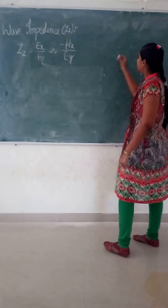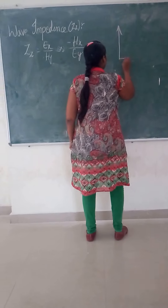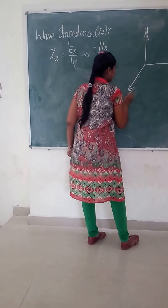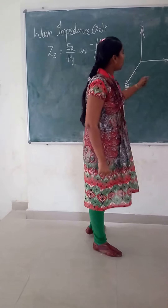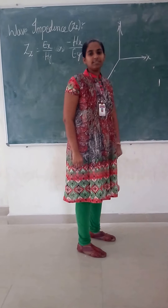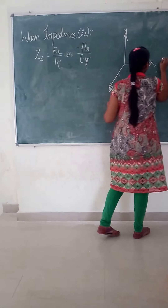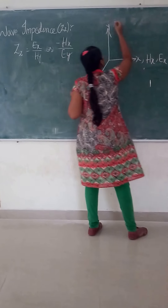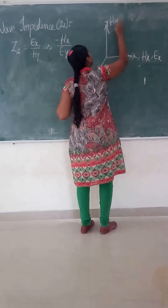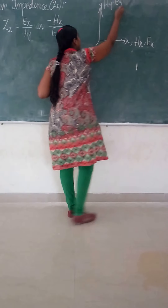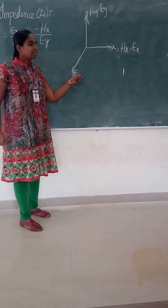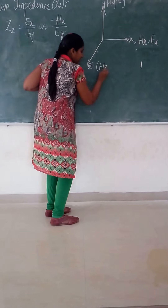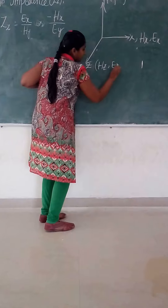We have the three dimensional coordinates X, Y, and Z. Every coordinate will have the electric field and magnetic field. In the X axis we have electric field and magnetic field, and Y also gives the electric field and magnetic field. Therefore, the Z axis is known as the propagation axis. Here also we have electric field and magnetic field.